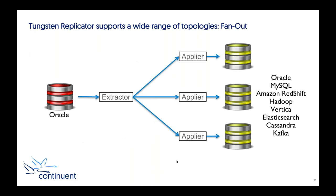We can also do the opposite — fan-out from a single source. If you've got an Oracle server and want to build a web interface using MySQL, but also do analytics and put it on Kafka as part of your processing pipeline, we can do that for you as well. This is actually what we'll be demonstrating: we can take from a single source and apply to multiple targets, all with only one single source pipeline — one replicator running on the Oracle server applying to a whole variety of targets.